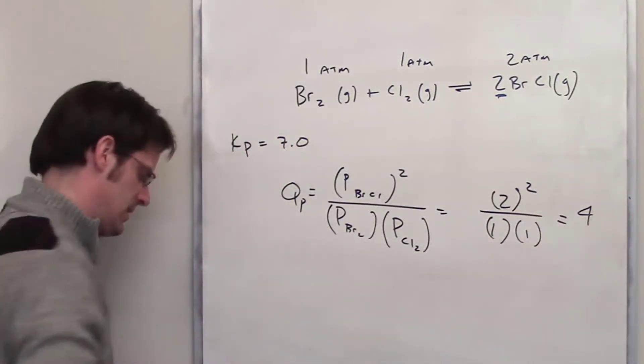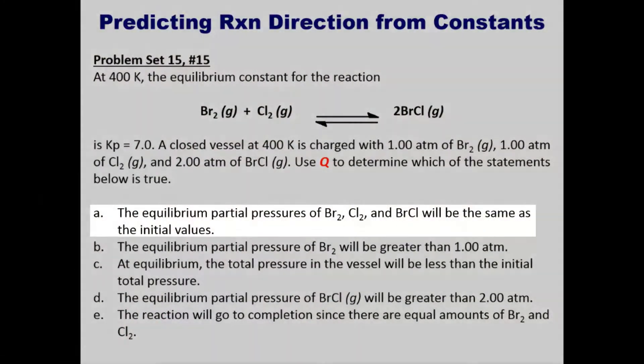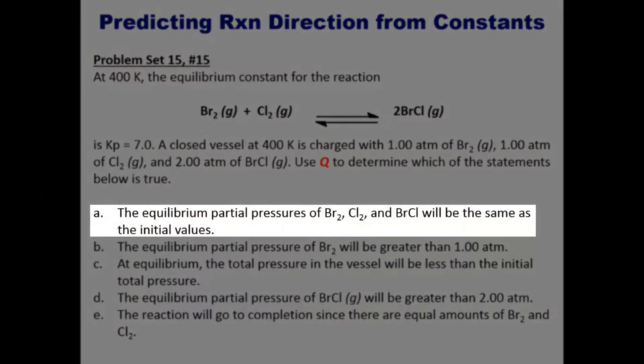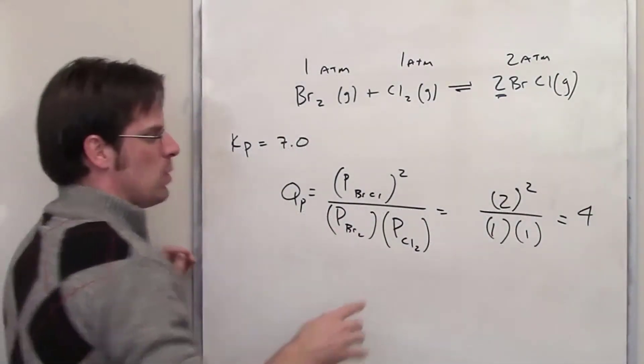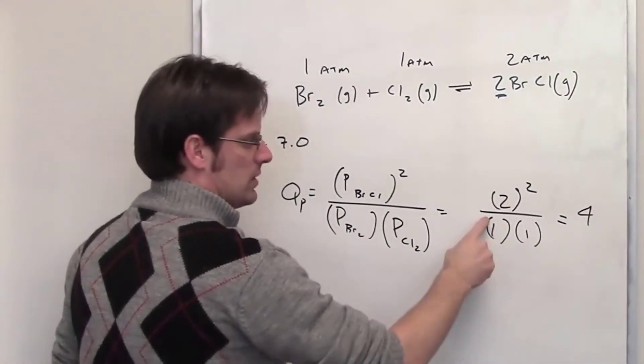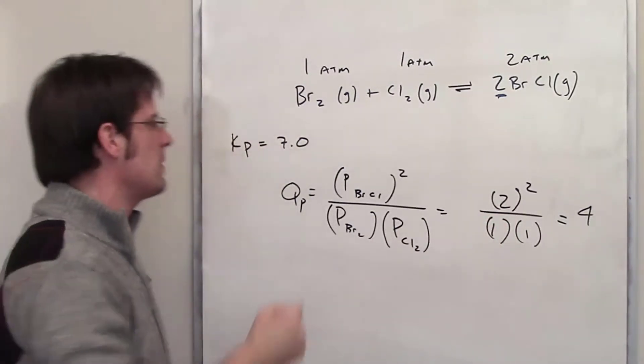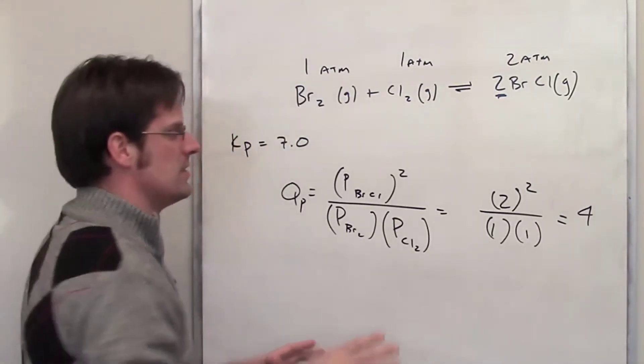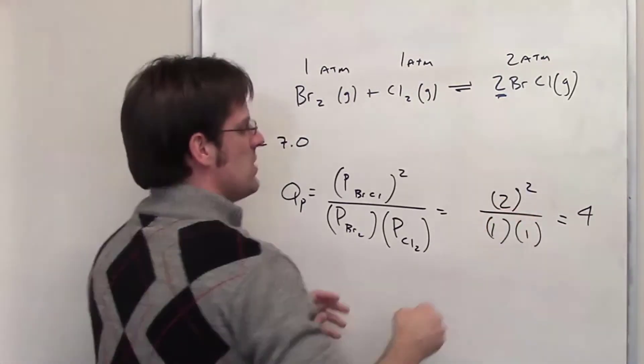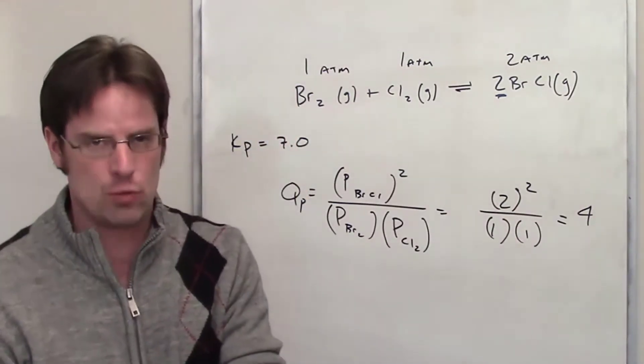I hope that that makes sense. So with that said let's look at the multiple choice options. Option A says the equilibrium partial pressures of bromine, chlorine, and bromine chloride will be the same as the initial values. Going back here to what we've written on the board, here are the initial values. Does it make sense that these initial values are going to be the same as what they would have at equilibrium? Well of course that doesn't make sense at all because the initial values are such that Q ends up being four and it needs to be seven, so that first statement is complete rubbish.